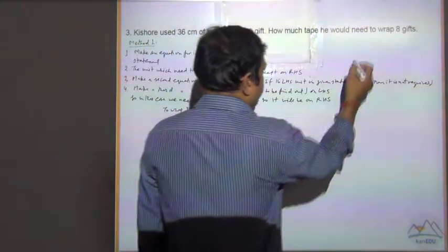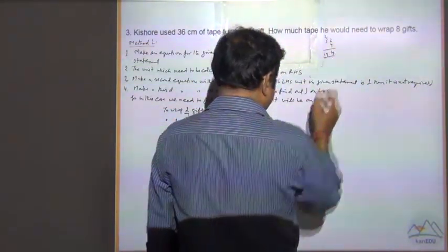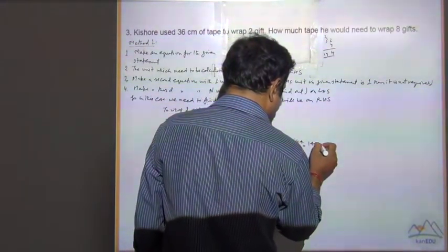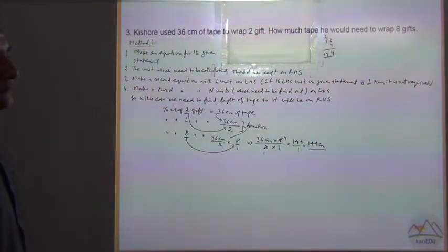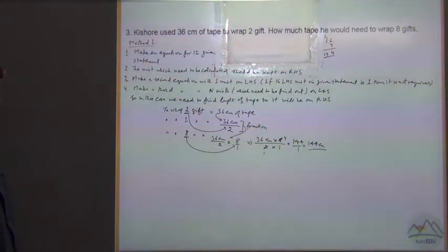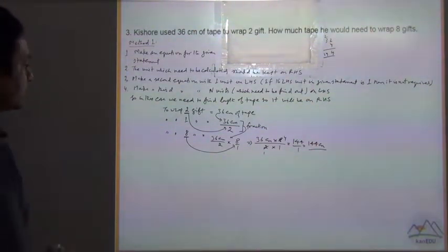36 multiplied by 4 equals 144, divided by 1 equals 144cm. So 144cm of tape is required to wrap 8 gifts. This is Method 1.